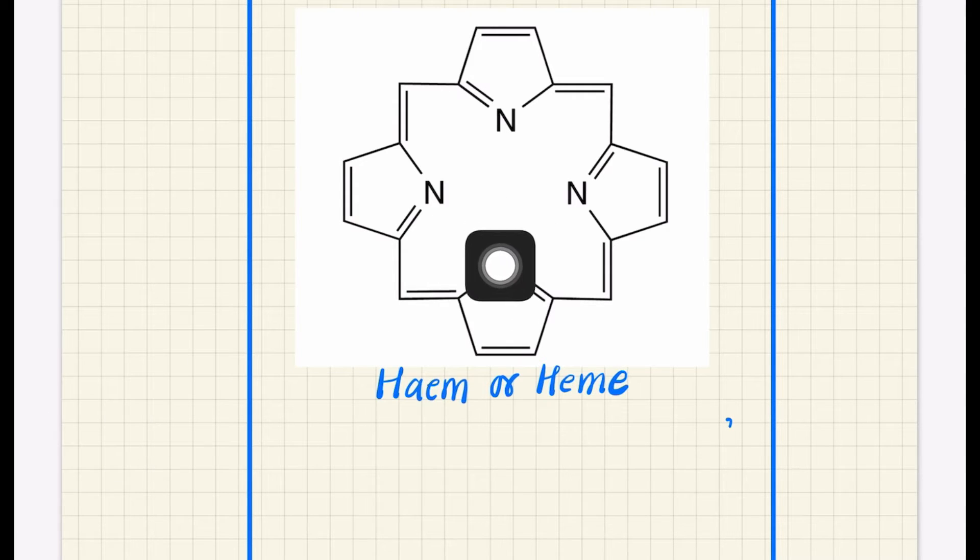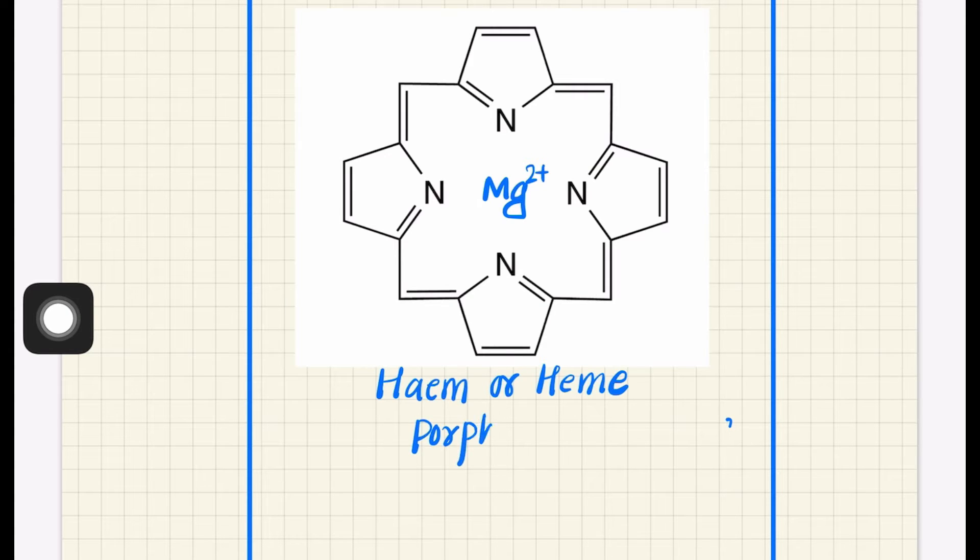And there is a central item that is present inside, which is magnesium ion Mg2+. Both the magnesium 2+ ion and this heme ring, that is also known as porphyrin, are colorless.